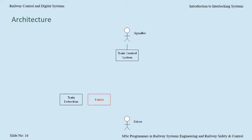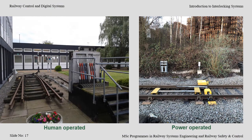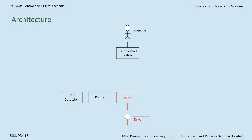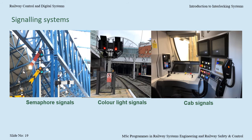There are point operating mechanisms. These could be human operated, such as someone operating a ground frame, or it could be power operated, for instance using an electrical, hydraulic or pneumatic point machine. There is also the means by which the railway control system communicates the movement authority to the driver. It could be by semaphore signals, colour light signals, or in-cab display.